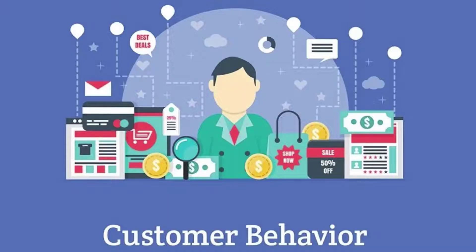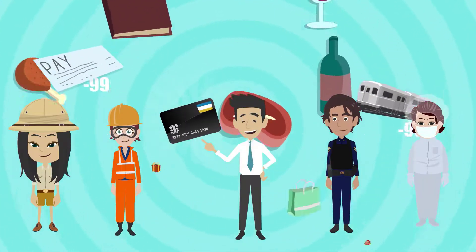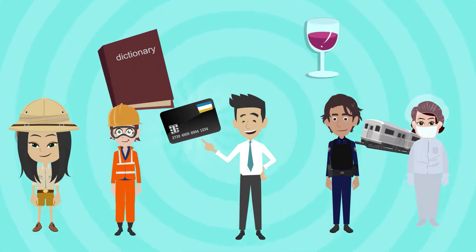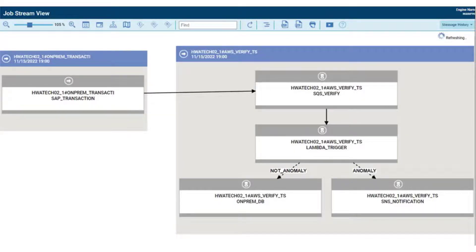A behavioral model is built according to the customer's transaction historical data. The bank realizes that a specific customer usually makes X transactions in X days and spends X amount of money. Since the bank knows the behavioral model of each of its customers, whenever there is a new transaction, HCL Workload Automation automatically triggers a process through Amazon SQS and runs AWS Lambda by event.